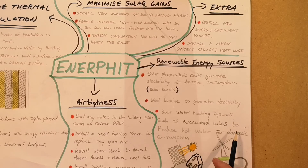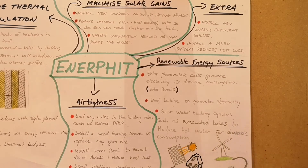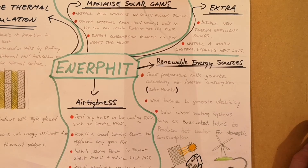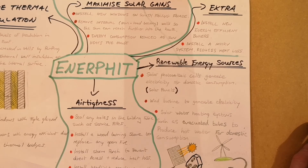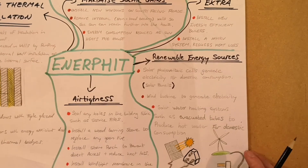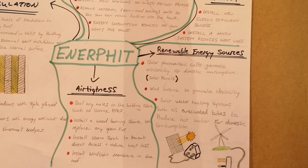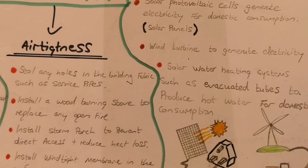Finally, there are solar water heating systems, such as evacuated tubes. What they do is take the heat from the sun and use it to heat your hot water for showers and so on — a more renewable energy source rather than using electricity or oil for heating water.